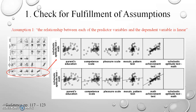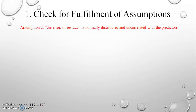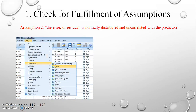Now that the first assumption is fulfilled, we need to ensure the second assumption is also fulfilled. The second assumption requires us to ensure that the error or residual is normally distributed and uncorrelated with the predictors. To do this, let's go back to our HSB data file and in the menu bar click Analyze, Regression, and Linear.